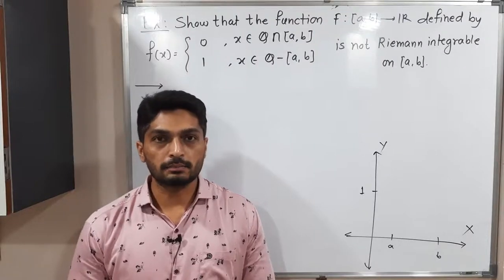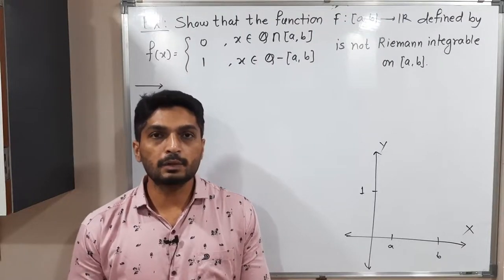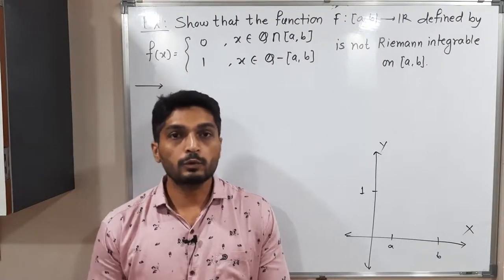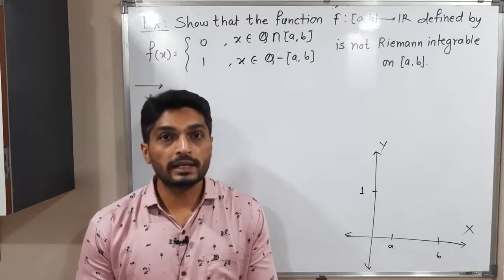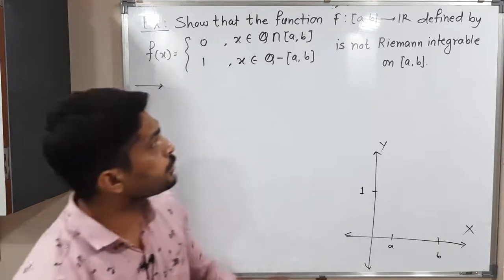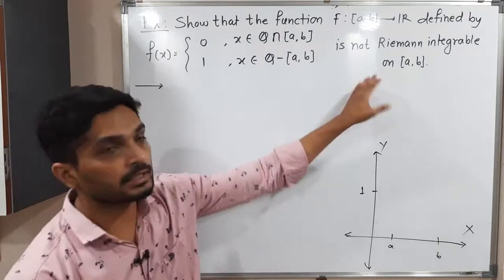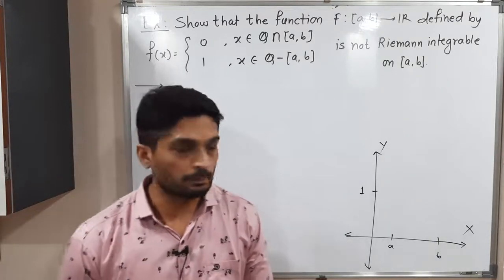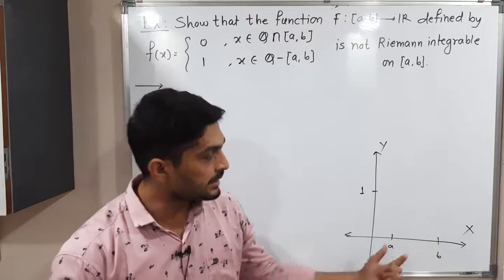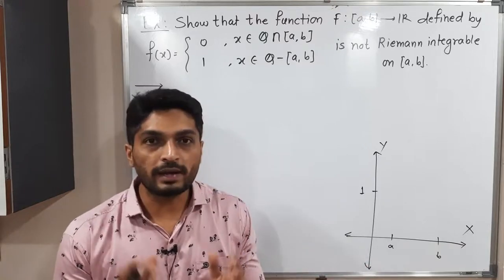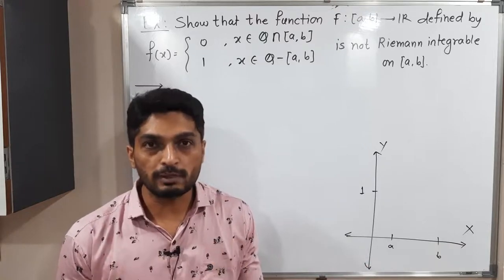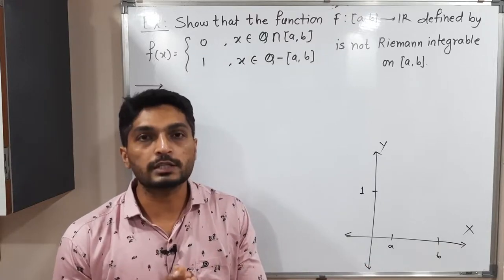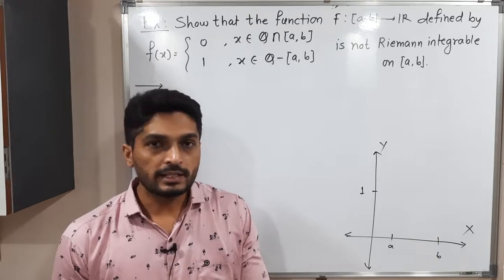Let us discuss this example. We have function f and we have to prove that this function is not Riemann integrable on closed interval [a,b]. In this diagram, we have a closed interval a,b and function f is defined on closed interval a,b.